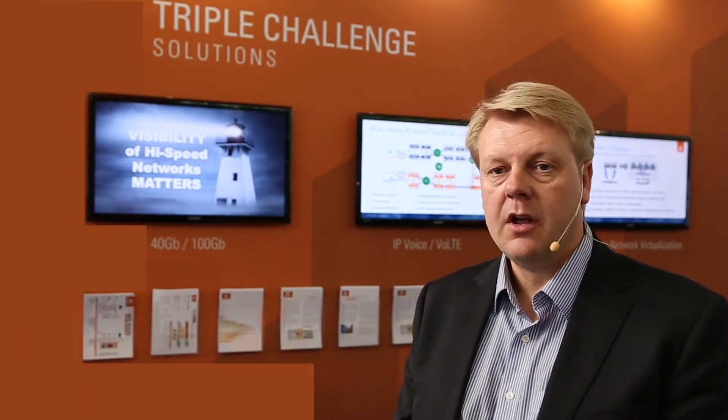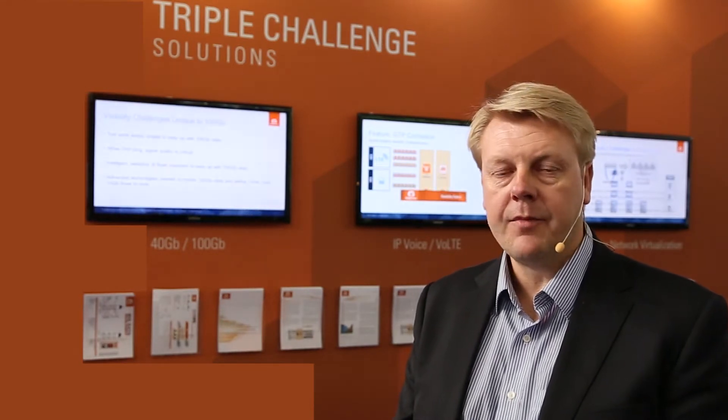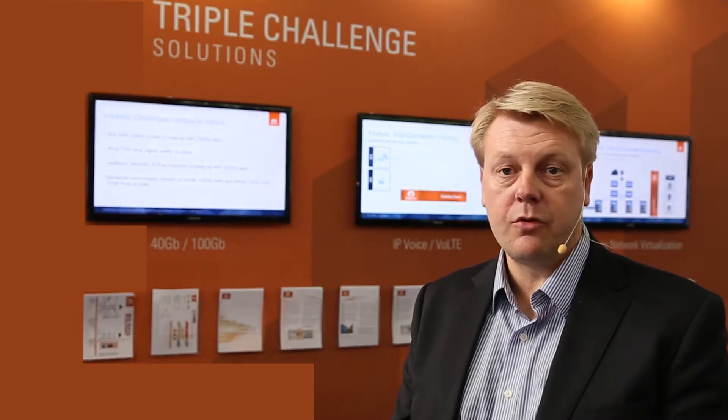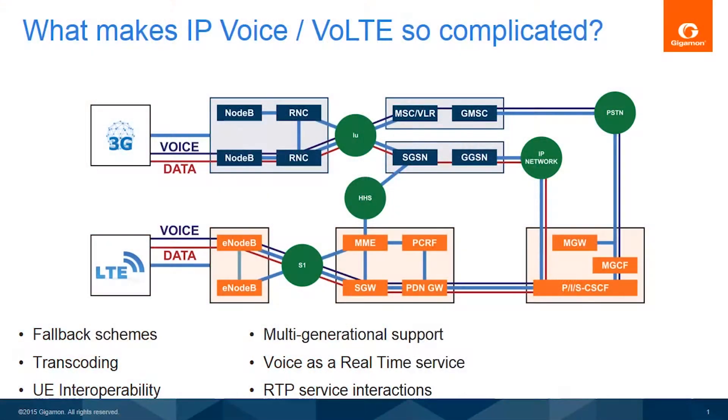The triple challenge for operators is all about 100 gigs — large pipes that you can't connect analytic tools to — real-time services such as VoLTE, and also carrier network virtualization, SDN and NFV. How do you debug the issues associated with a real-time service such as VoLTE when you've got three layers of virtualization and large transport pipes that also have over-the-top traffic in them? We think that VoLTE is quite something that needs to be monitored and understood.